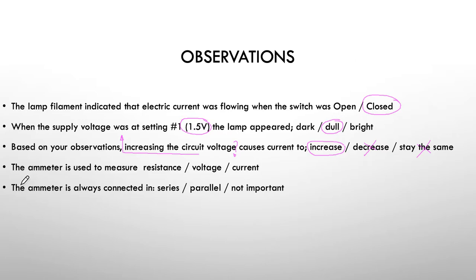The next is the ammeter is used to measure what? What does an ammeter measure? Of course the hint is in the name. It's an ammeter, a meter that measures amps. And amps is a unit of current. Therefore an ammeter measures current. It does not measure resistance, it does not measure voltage.